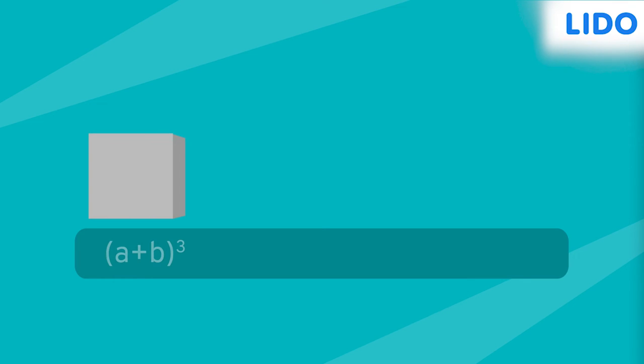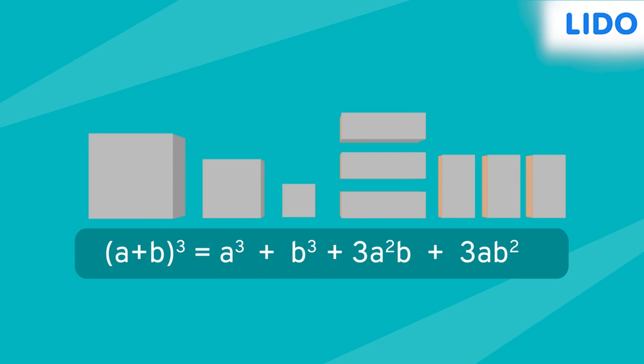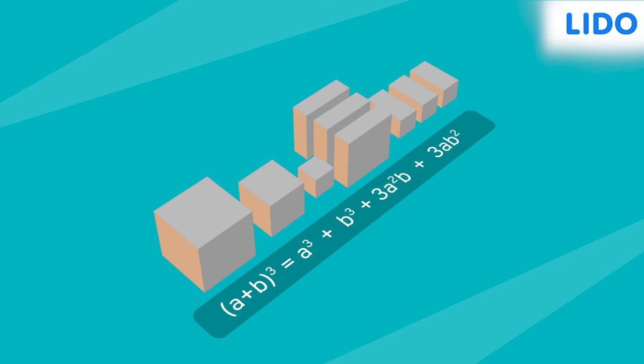We know that (A plus B) the whole cube will be a cube like the Rubik's cube and will have A cube, B cube, 3A square B, and 3AB square. We can clearly see that A cube and B cube are a part of (A plus B) the whole cube. Therefore, they can't be equal.